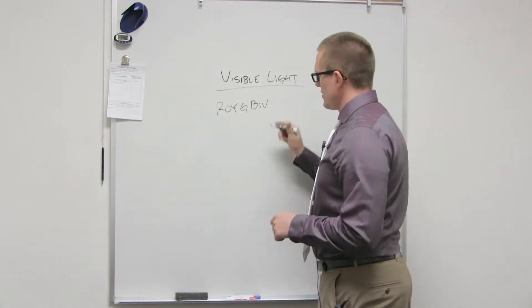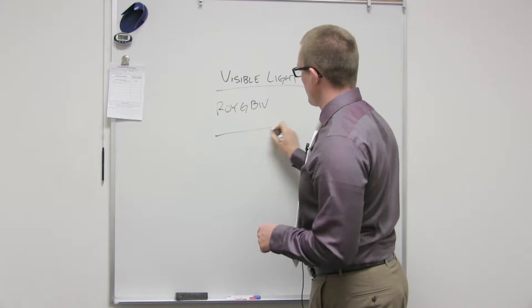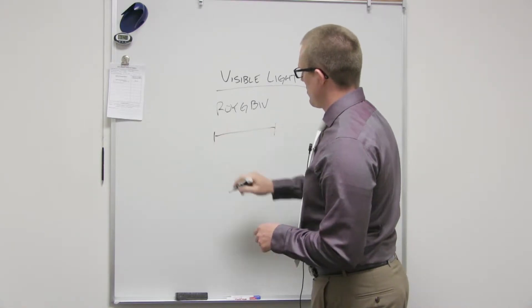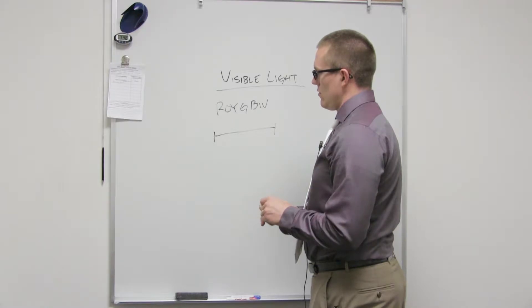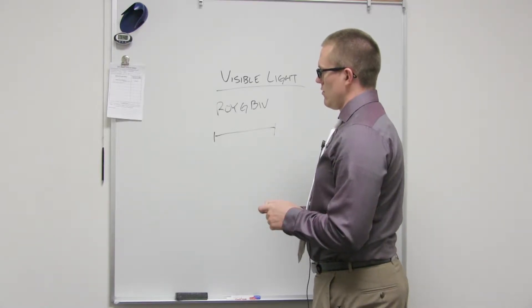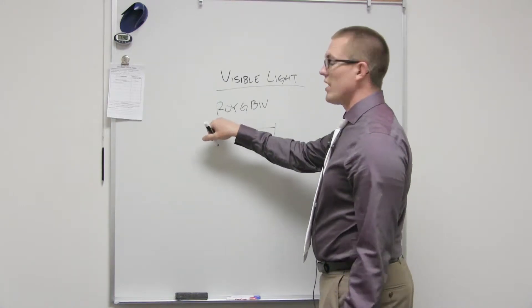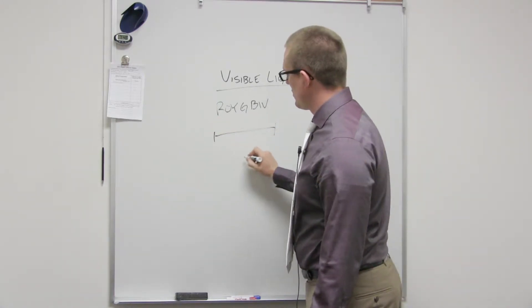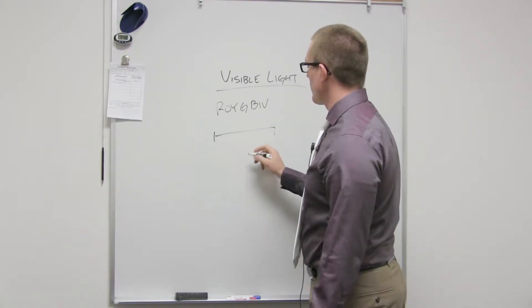And so violet has the, on this scale, which one has the shortest wavelength? I'd be guessing if I said. Okay. So red has the shortest wavelength. So the wavelength is decreasing. Or sorry, sorry, red has the longest wavelength.